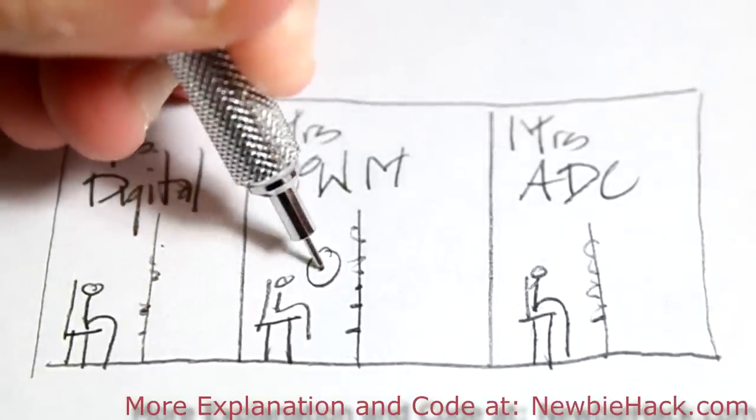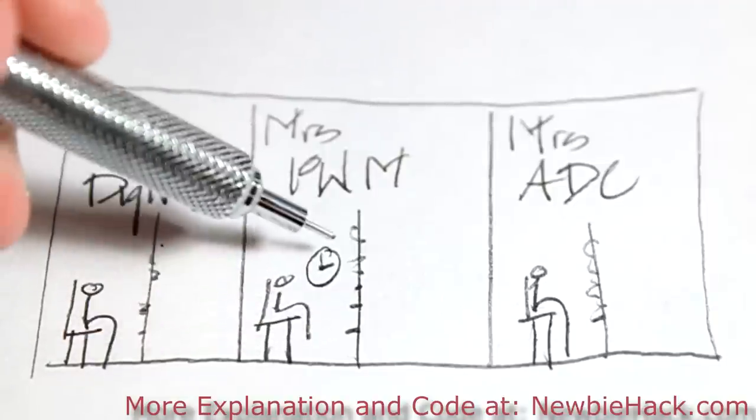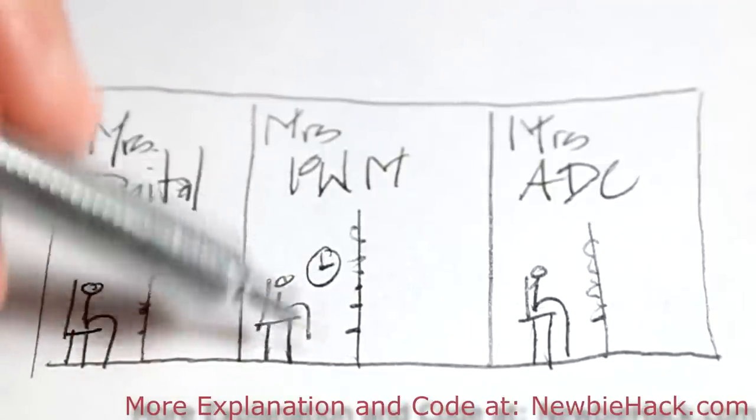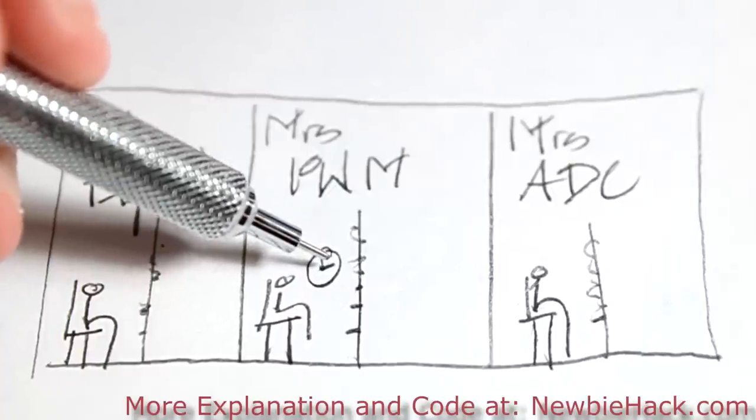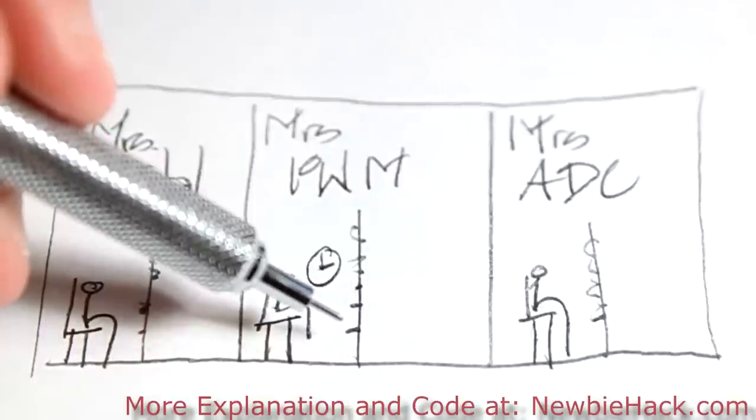And what she does is she listens for pulses for a one and she listens for a zero. Whenever she hears a zero, she starts the stopwatch. When she hears a one, then she stops the stopwatch and tells you the time on that stopwatch.